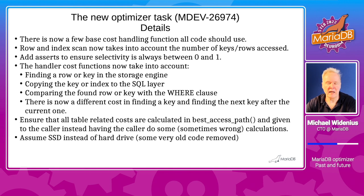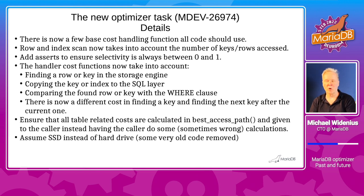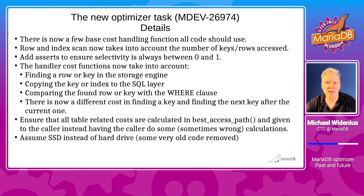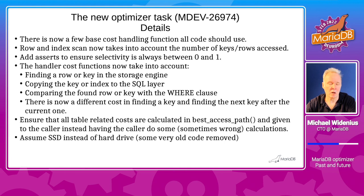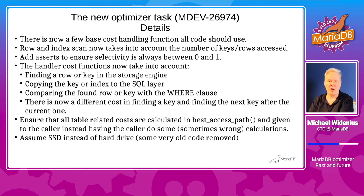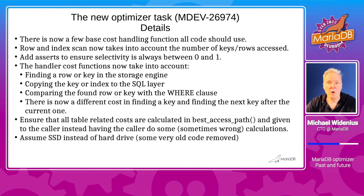What I've been doing is changing most of the cost handling to be done with a few functions in the handler interface. In all parts of the code we now take into account the actual number of calls we do to get a key or a row. There's also a clamp to ensure that selectivity is always between zero and one, which has allowed me to find and fix all the selectivity issues that exist in the code. We now take a separate cost for finding a key, finding a row, finding a key in the row, and copying the key or row to the SQL layer — which we didn't do before. Comparing with the WHERE clause is now always done in the same manner in all optimizations.